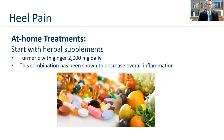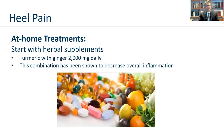At-home treatments for heel pain: I generally start with herbal supplementation — turmeric with ginger, given at 2,000 milligrams daily. You can pick this up at Costco or Amazon. You have to have the ginger with the turmeric; turmeric alone will go straight through your system, which is not a pleasant experience. This has been shown to decrease overall inflammation — not just for plantar fascial pain or posterior heel pain, but all inflammation.